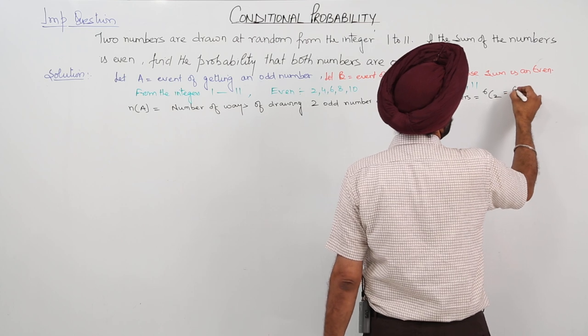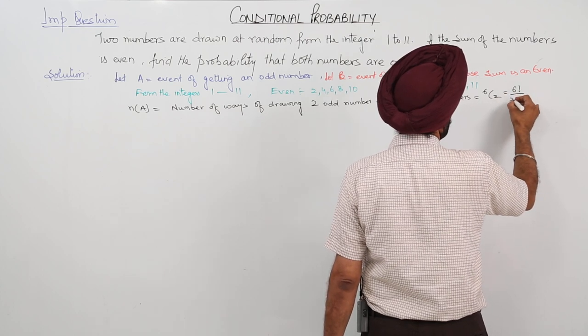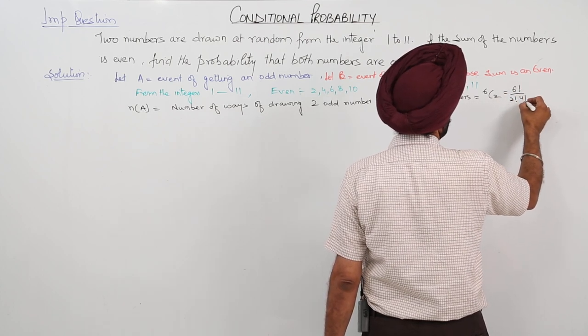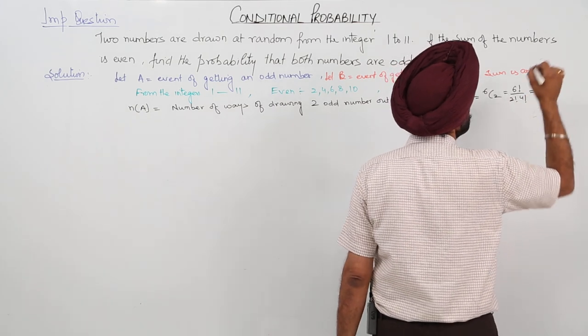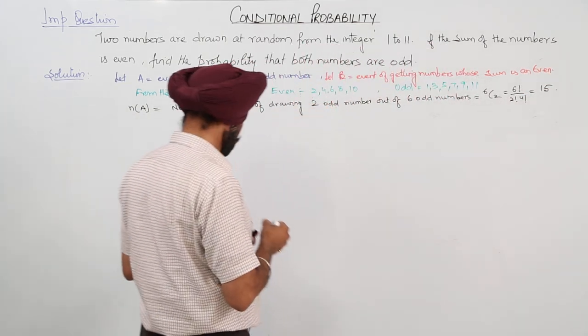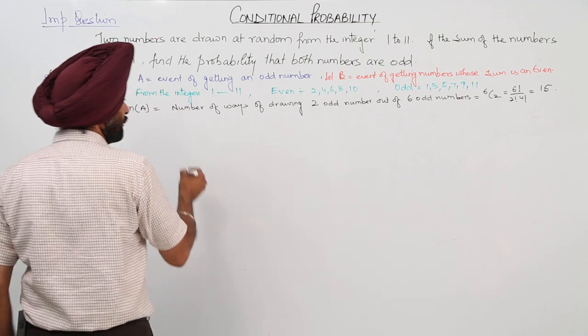Now this is 6 factorial upon 2 factorial 4 factorial. On solving you will be getting this as 15.